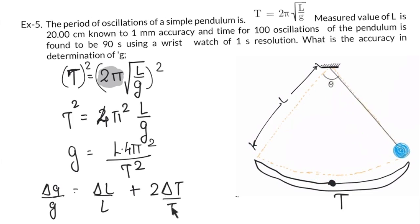Capital T is not given to you and delta capital T is also not given to you, because capital T and delta capital T are time for one oscillation. And in the question, they had given that for 100 oscillations, time small t is given; capital T is not given to you.